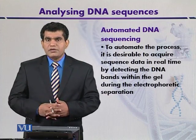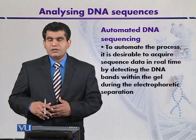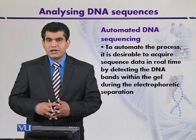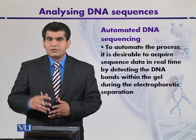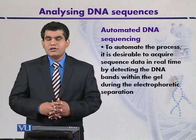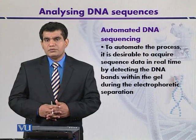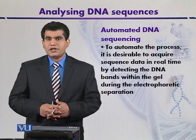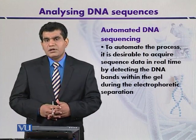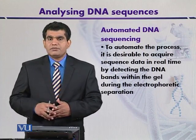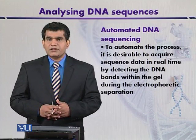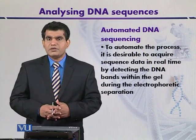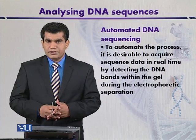In automated sequencing, different types of fluorescent dyes are used to label the dideoxynucleotide triphosphates. Radiolabelled materials are not used; instead, different types of chromogenic materials like fluorophores are used to stain the dideoxynucleotide triphosphates.